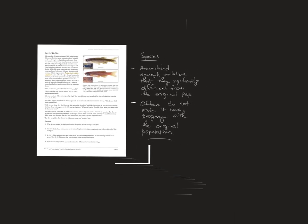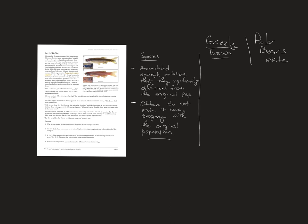A great example — though a sad one because it's likely only true because of global climate change — is polar bears and grizzlies. Grizzlies are brown, polar bears are white. Most people would say they're two different species, and they'd be right. In nature they normally don't meet, don't mate, and don't produce progeny.